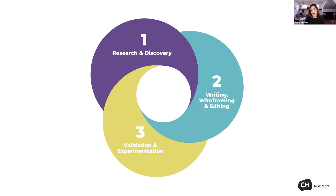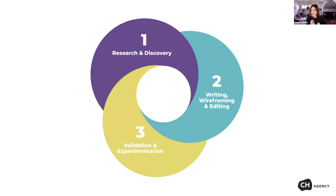We've got research and discovery, writing, wireframing and editing, and then validation and experimentation. These are all showing as the same size right now, and they're not ever going to be the same size in a project. When you're first working with a client, you'll probably have a huge research and discovery bucket. You have to do so much, and then writing and wireframing might be a little smaller and validation might be much bigger because you don't know anything about this client and their audience yet — you're making a lot of assumptions. It's a conversion copywriting process. It's pretty straightforward, and you color it with your own stuff as you go.